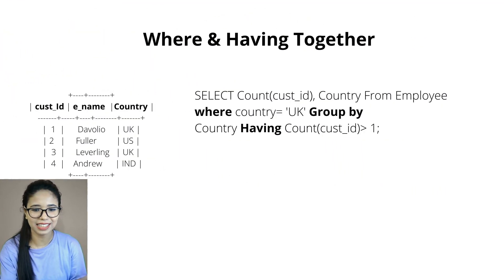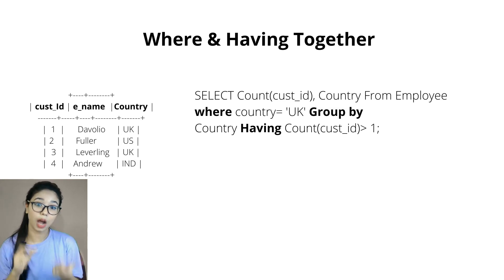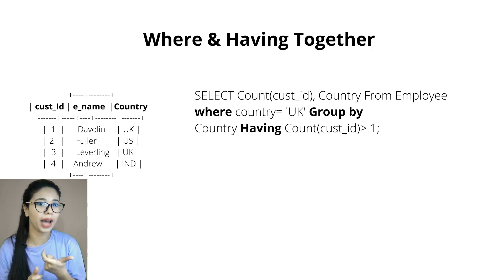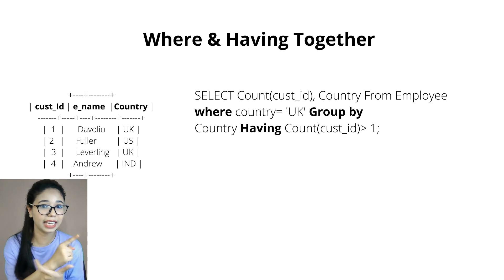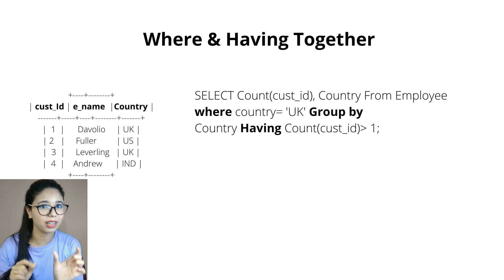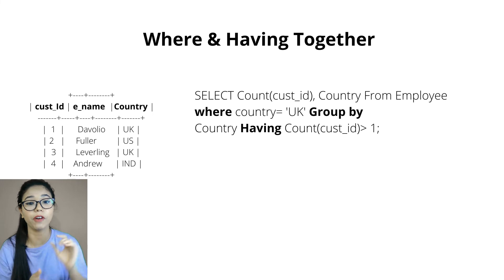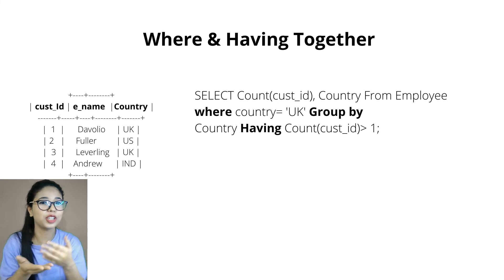Now, can we use WHERE and HAVING in the same query? Yes, we can. For example: SELECT COUNT(cust_id), country FROM employee WHERE country = 'UK' GROUP BY country HAVING COUNT(cust_id) > 1. Here, WHERE filters to only UK records first, then GROUP BY groups them, and HAVING filters on the aggregated count. It gives the count of customer IDs for UK only.